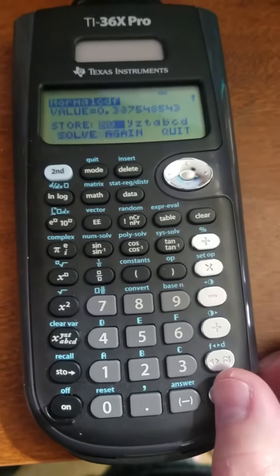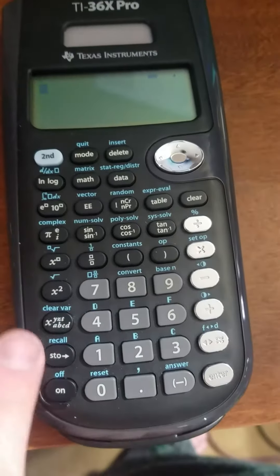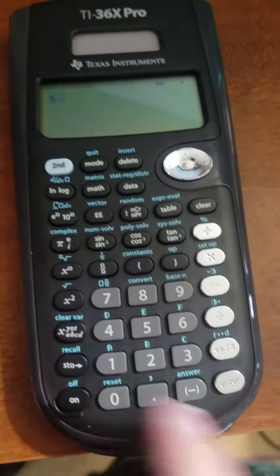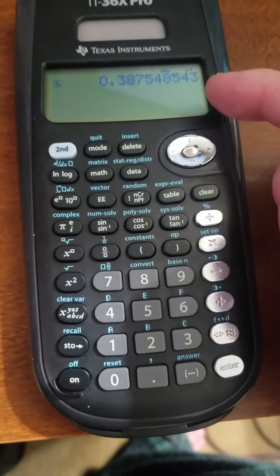So if I just select X and then say quit, then when I press X down here, that value has been stored in X. That's 0.3875.